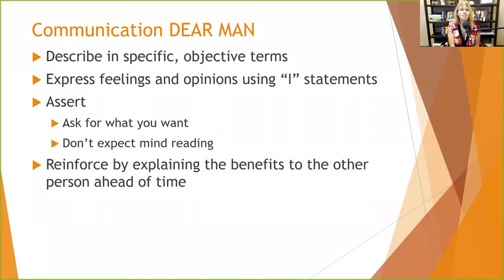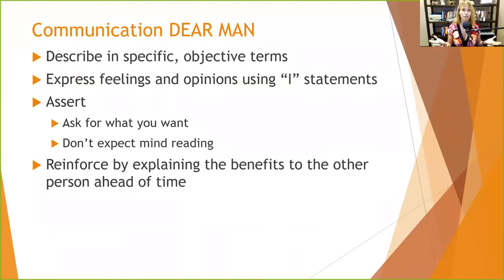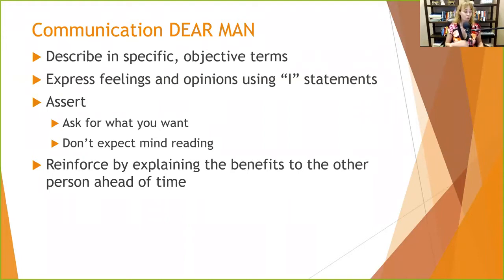In DEAR MAN, D means to describe in specific, objective terms. If you're going to be specific and objective, write it down so that someone from off the street can read that description, look at the situation, and say yes, that's done, or no, that's not. For example, a clean kitchen might mean dishes are done and put away, all stainless steel is wiped down, all flat surfaces are clean, and the floor has been swept — those are very objective things anyone can verify.